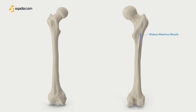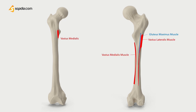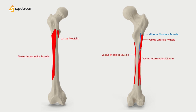A third gluteal muscle, the gluteus maximus — your butt muscle — attaches to the gluteal tuberosity. On the linea aspera, we have three vastus muscles that help extend the knee: the vastus medialis, vastus lateralis, which originates from the greater trochanter and runs down, and between them the vastus intermedius. There are also three adductor muscles: adductor magnus, adductor brevis, and adductor longus.